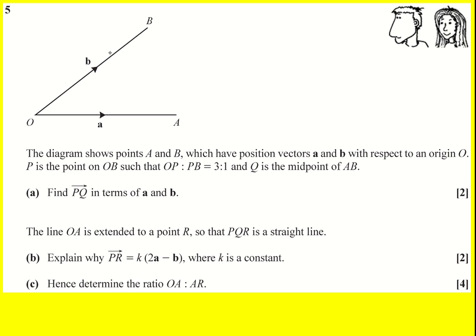So OP to PB is going to be about here I think. I'm just going to sort of indicate that it's 3 to 1. Now I don't know the lengths but I could write 1 and 3 or x and 3x, but I'm just using this for myself rather than to be accurate so I'm going to write 1 and 3. And then Q is the midpoint of AB.